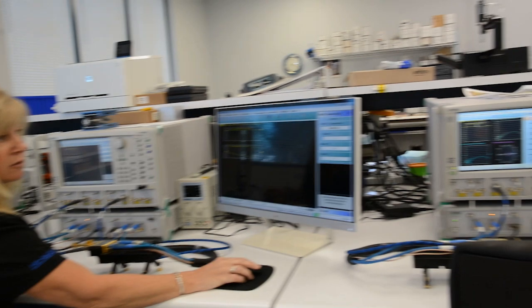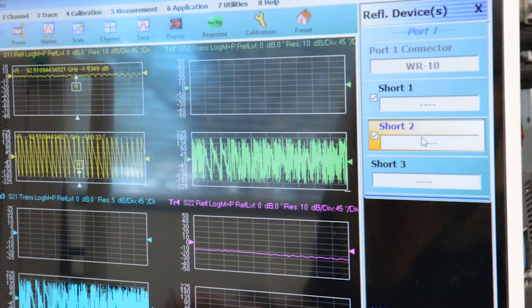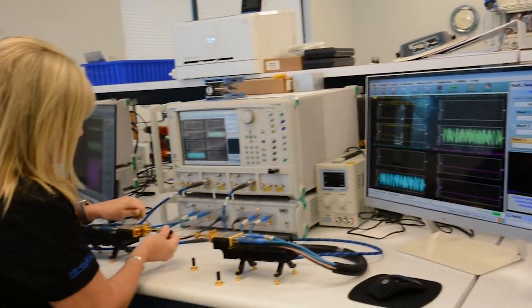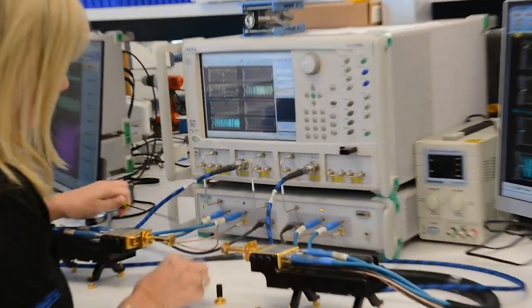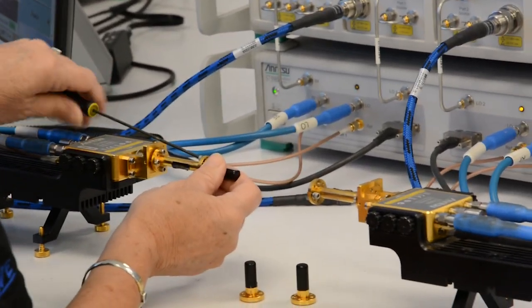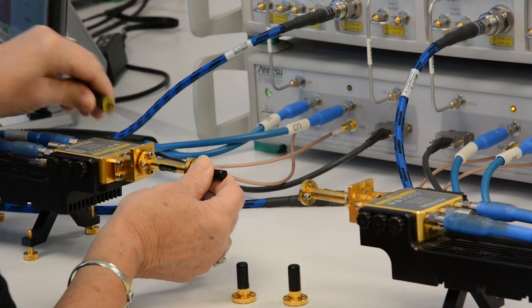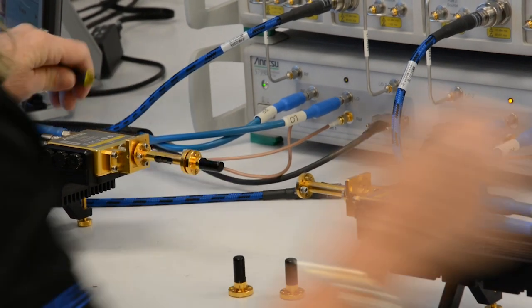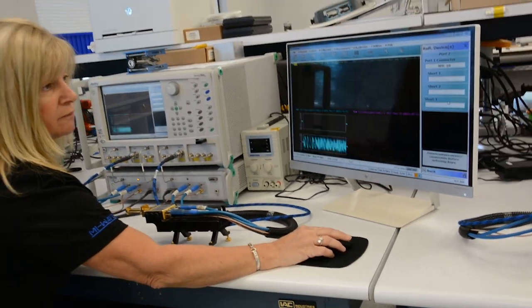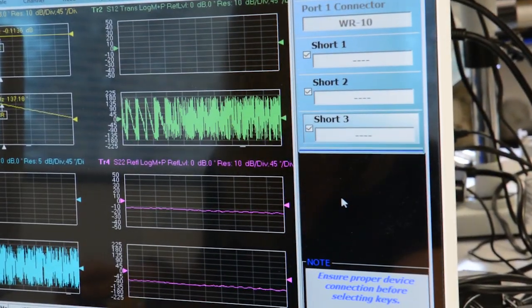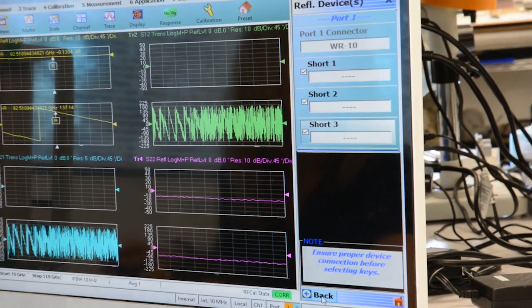Again, click on this box. When you have a check mark, short three, your quarter inch short. And now we have completed our port one calibration.